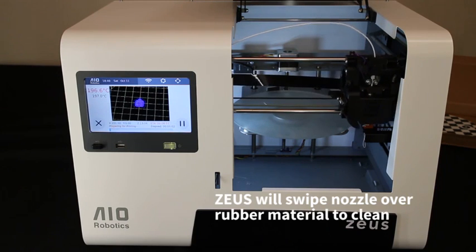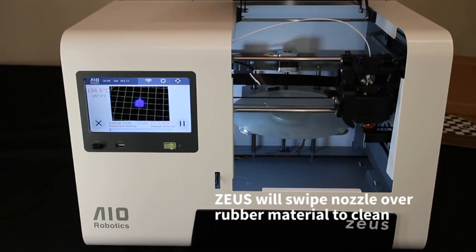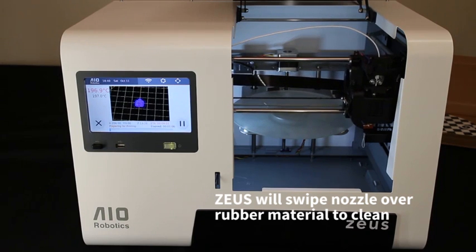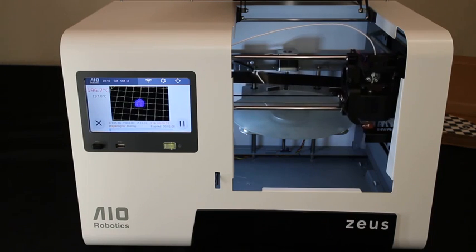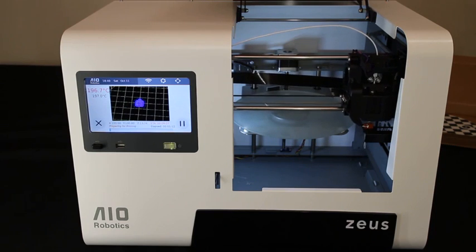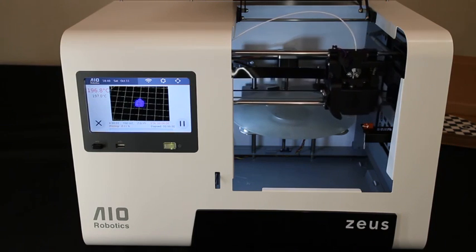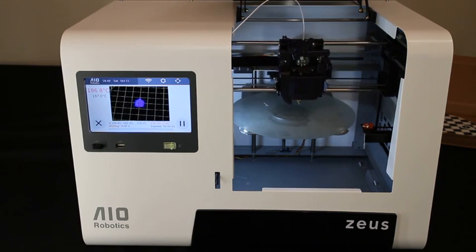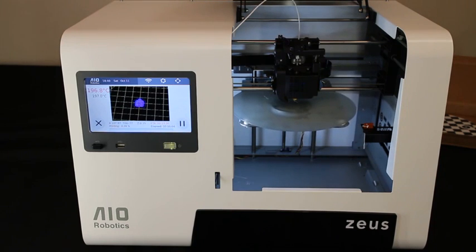The extruder head will extrude old printing material through the nozzle. And for that reason, it swipes its nozzle over rubber material. Now the cleaning process is finished and the print will start.